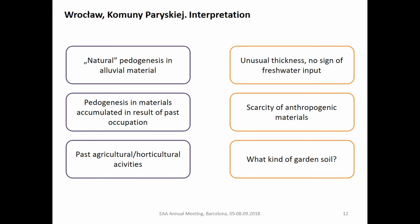When we combine all these results and try to come up with a history of formation of this horizon, we look at the first hypothesis — natural pedogenesis in alluvial material — and decided to reject it because the thickness is unusual for other known soils in such settings, and there is no sign of freshwater input in the thin sections. The second hypothesis — pedogenesis in materials accumulated as a result of past occupation — well, we don't have those materials. Papers describing dark earth formation from such processes show thin sections full of anthropogenic material; we didn't have that — it's a very different picture. So we speak in favor of the third hypothesis: that the formation of this horizon is related to past agricultural activities which happened in the suburbs.